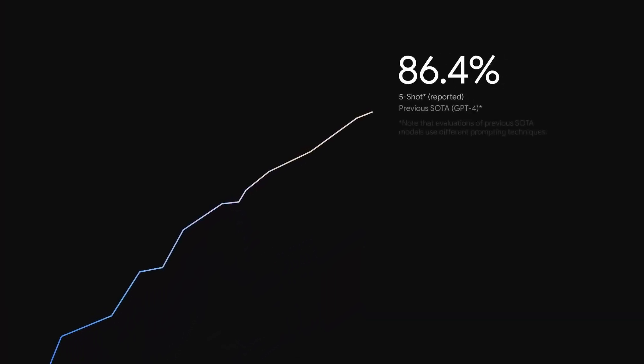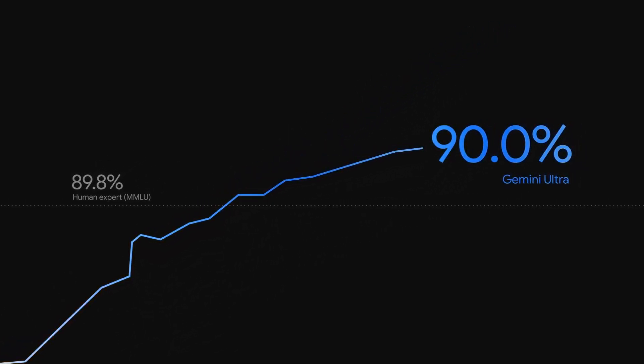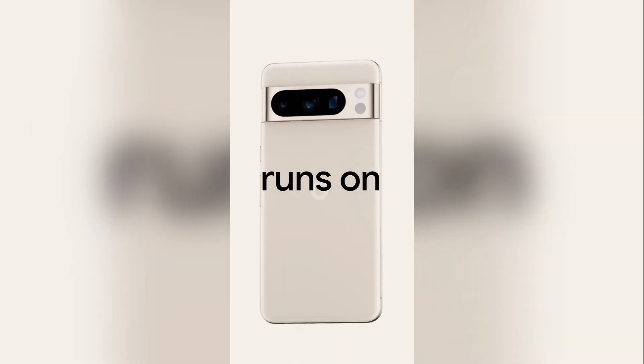Gemini Ultra has a lot of accuracy — more than ChatGPT. The next one is Gemini Pro, which is essentially an upgraded Google Bard — more efficient and reliable. Then there is Gemini Nano. If you want to use all of these, you can use them across various apps.